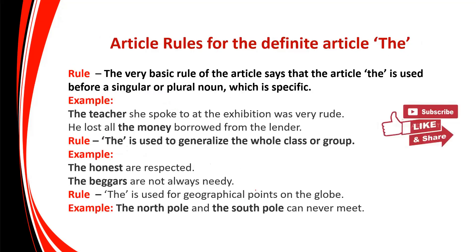Now there are other rules for the usage of definite article which you have to remember, because they will be asked in your examination. The article 'the' is used when something is specific — that particular rule you have to remember. 'The teacher she spoke to at the exhibition was very rude' — a particular teacher is being mentioned. 'He lost all the money which he borrowed from the lender' — since it is particular, 'the' is used before 'money' and 'teacher'.